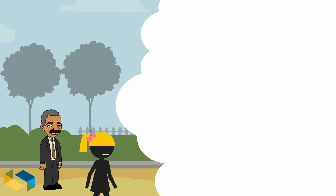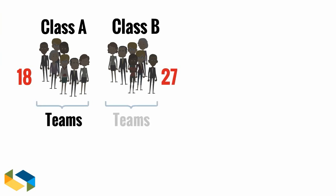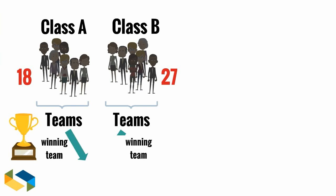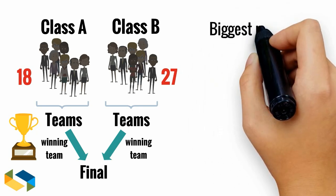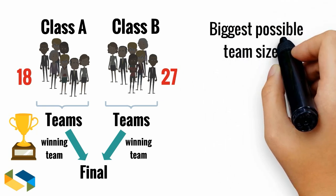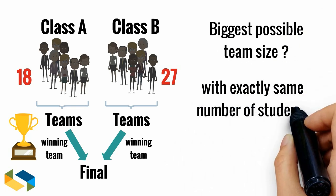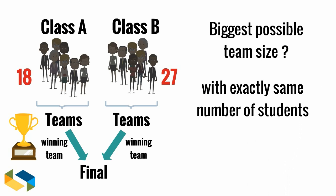To understand how this concept applies in real life, imagine this situation. Let's suppose there are 18 students in class A and 27 in class B. Each class divides into teams to prepare for an upcoming sports tournament. The winning team from each class plays each other in the final. What would be the biggest possible team size you could divide both these classes into such that each team has exact same number of students and that no one is left behind?